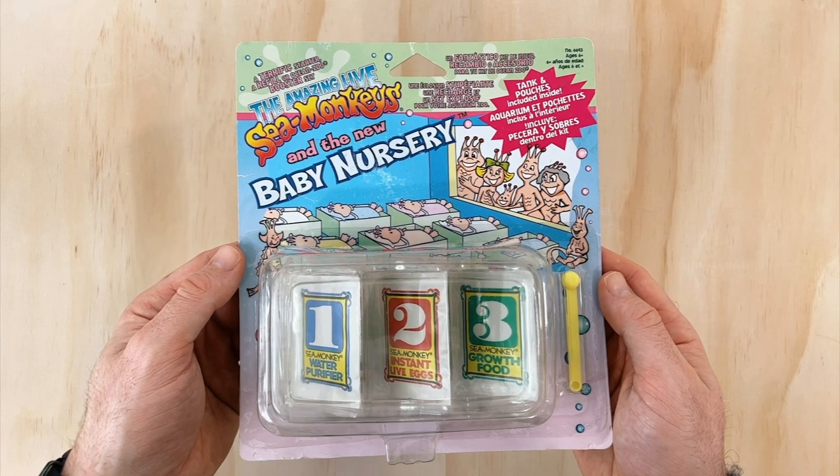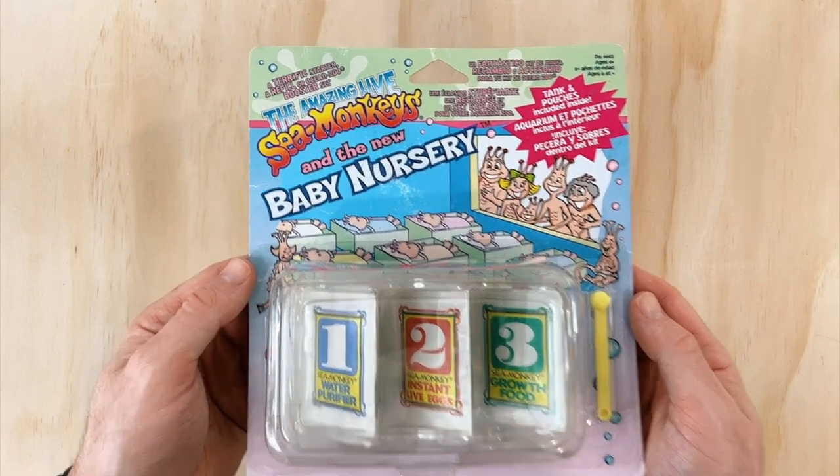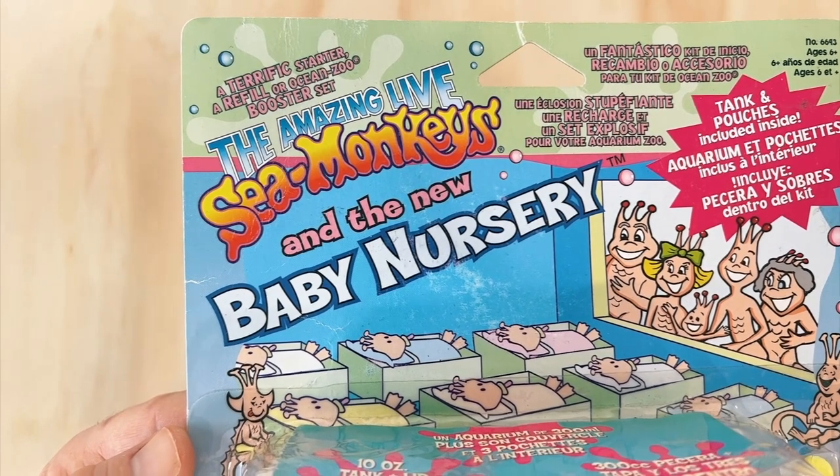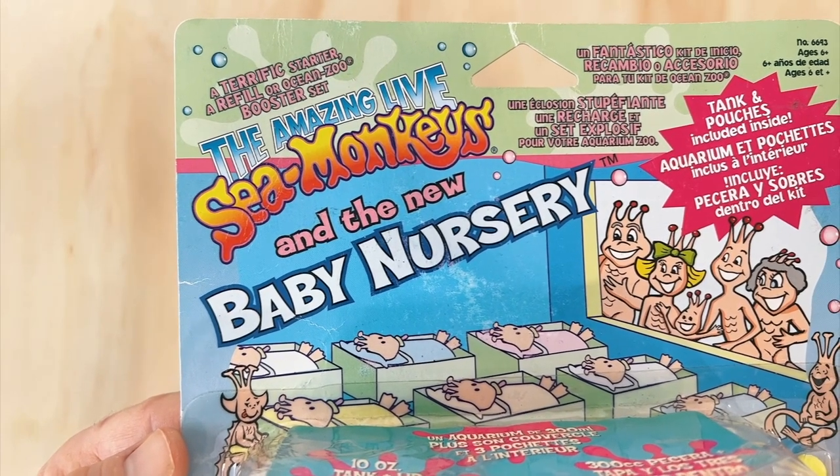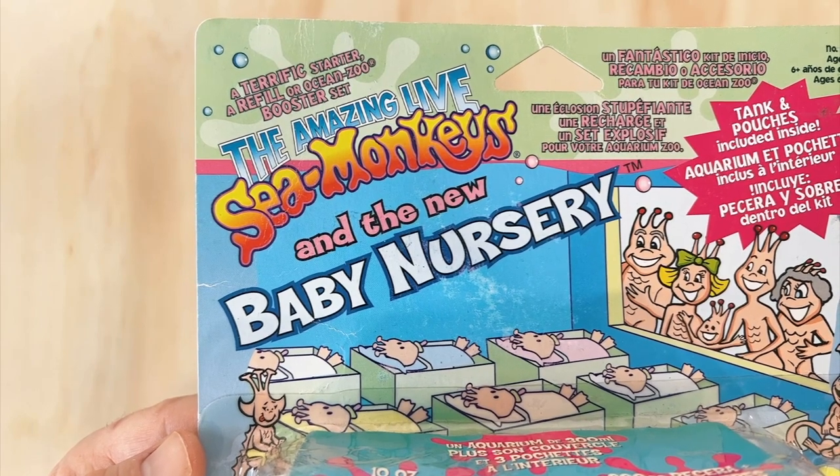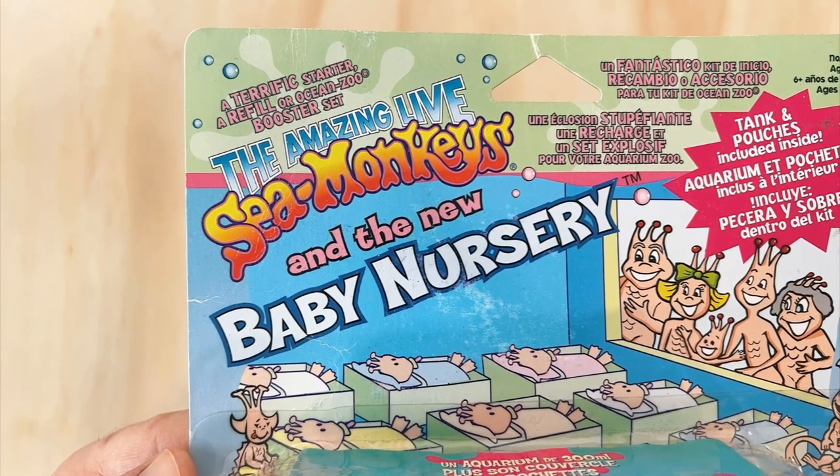I really like the artwork on the packaging here. The top left corner says the amazing life sea monkeys in the new baby nursery. This item wasn't sold for a particularly long time though, so I never got a refresh without this tagline saying that it was a brand new product. I do appreciate the baby blue and pink lettering they've used here though, it's a nice touch.